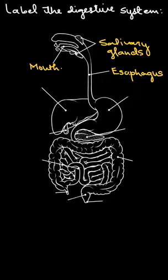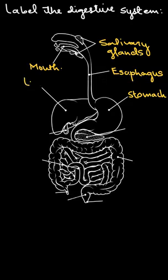Now this is the stomach, so here we have the stomach. Then on this side we have the liver, so here we have the liver. And here we have again a gland which is known as the pancreas.